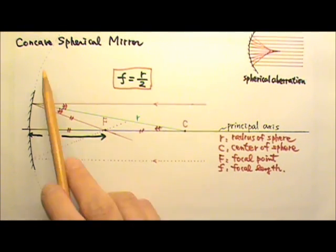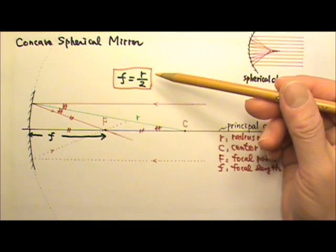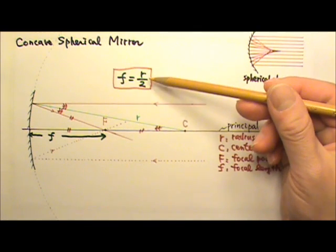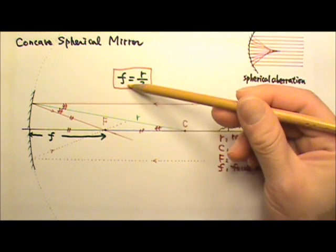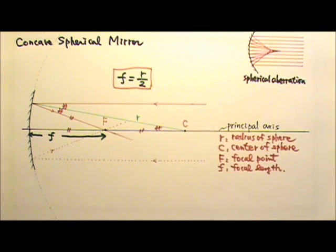The distance between the center of the mirror and the focal point is called the focal length. So the focal length is about half the radius. If we have a concave spherical mirror, we just divide the radius by two to get the focal length.